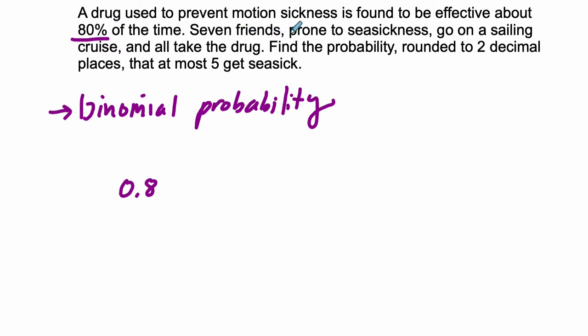Seven friends prone to seasickness go on a sailing cruise and all take this drug. Find the probability, rounded to two decimal places, that at most five get seasick. So we are concerned, let's say Q is where they don't get seasick. We want to find our success in this case is where they do get seasick. And that sounds a little cynical, but the idea is that we call P a success, not because they got sick and we want them to get sick, but because that's what we're trying to measure. The success is the thing we're trying to actually calculate.